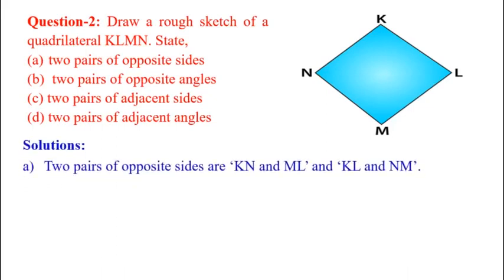First, two pairs of opposite sides are KN and ML, and KL and NM.